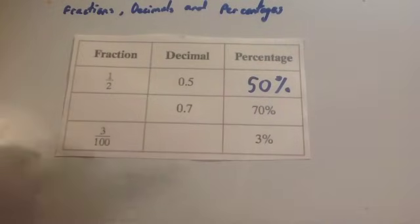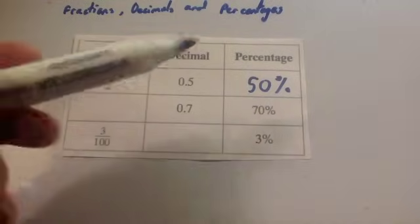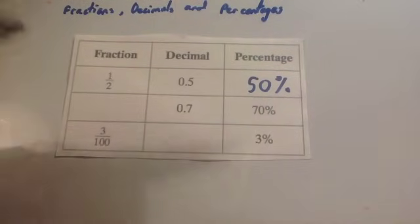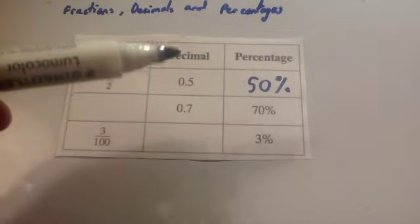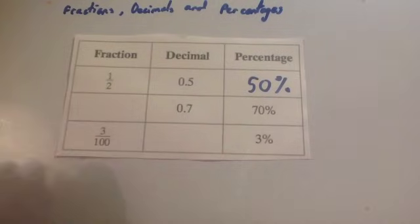There's some key ones that you should learn, and that's for instance a half being 0.5 and 50%, a quarter being 1 over 4, 0.25 and 25%, three quarters, a fifth, a tenth - those ones you should know off by heart.